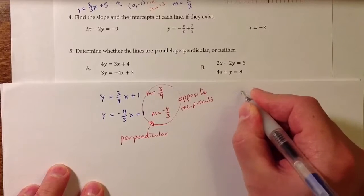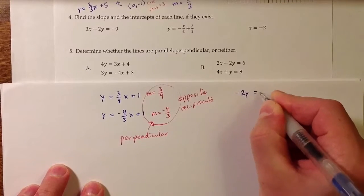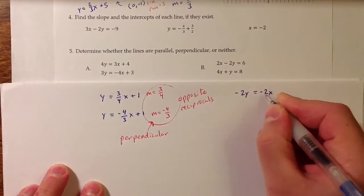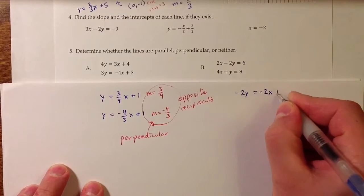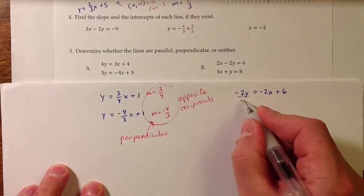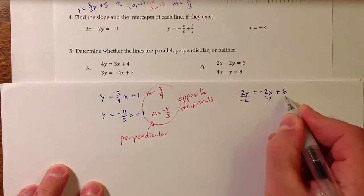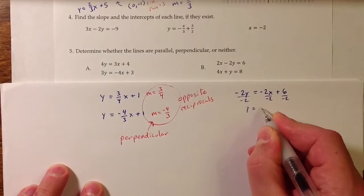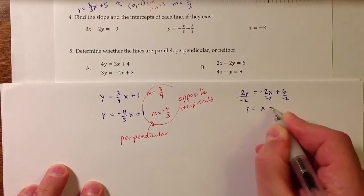For the first equation, I get negative 2y. If I subtract 2x from both sides, negative 2y equals negative 2x plus 6. And then if I divide each of those terms by negative 2, I get y equals positive x minus 3.